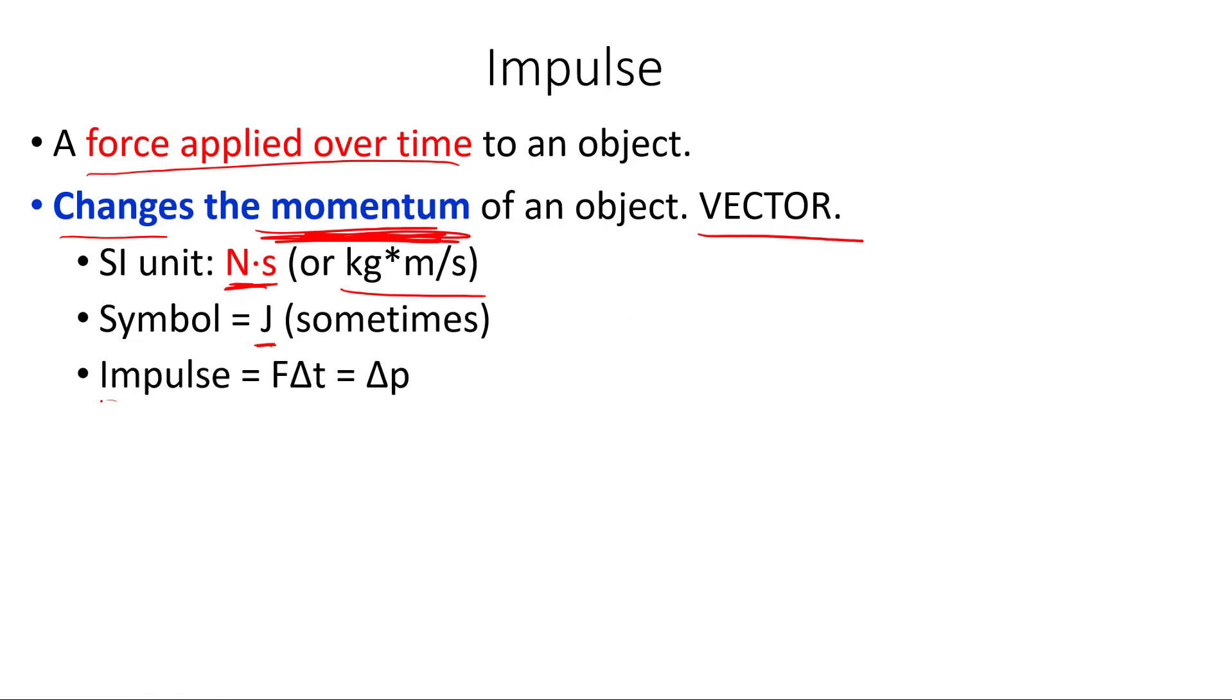Here's our equation for impulse. The impulse is equal to force times the time interval. What the impulse does is change the momentum. The amount of impulse you have is equal to that change in momentum of the object. Impulse applied to an object equals the change in momentum.